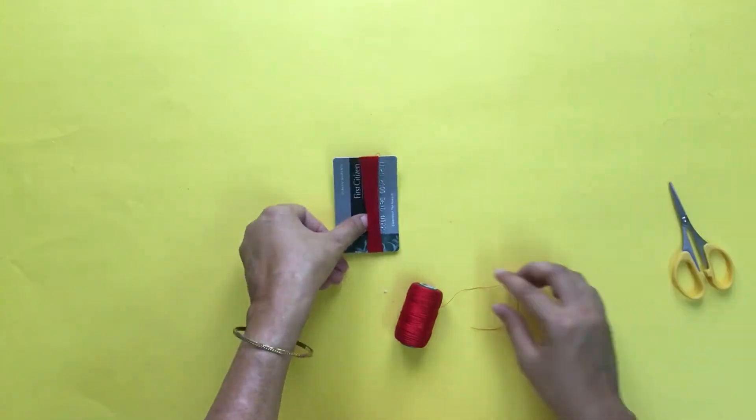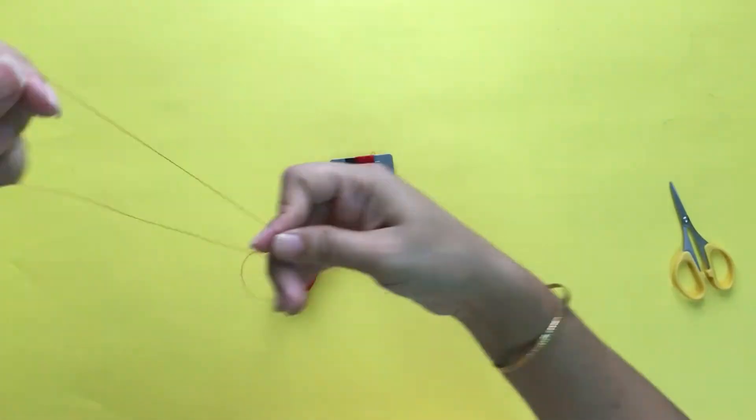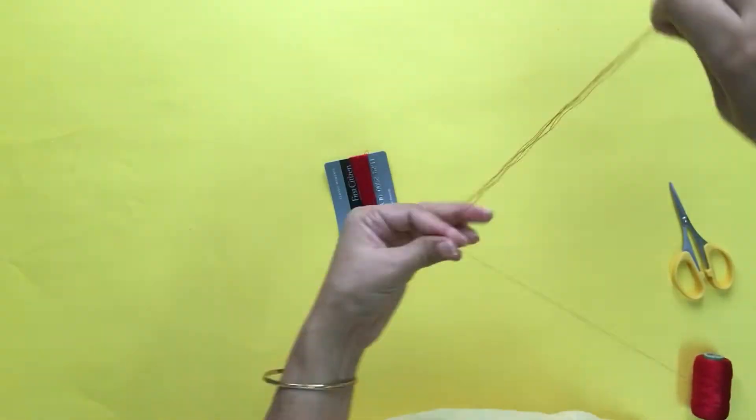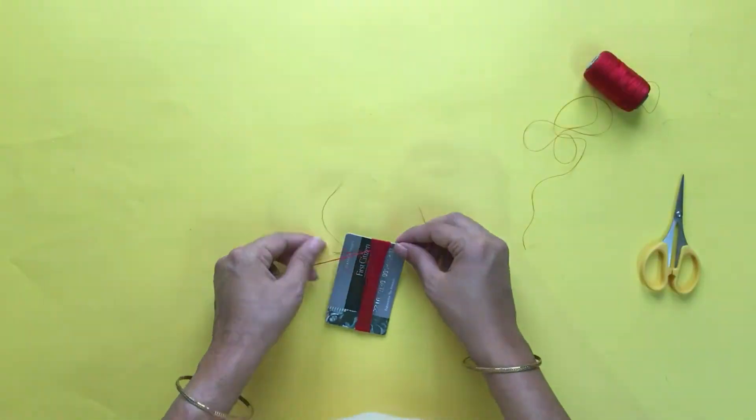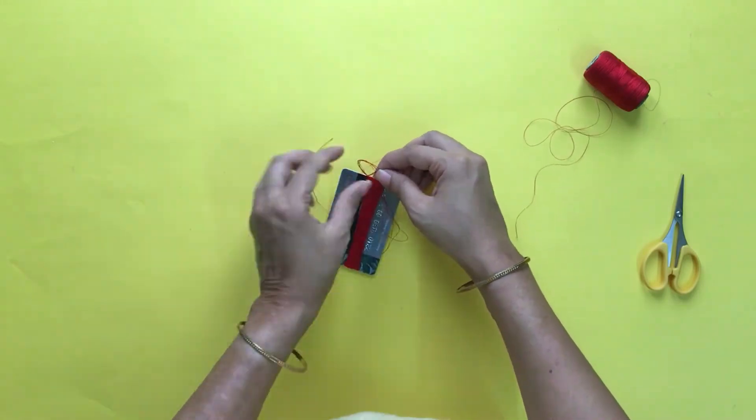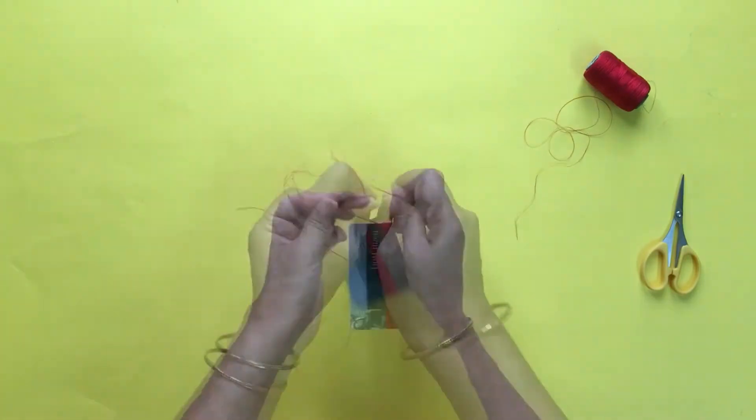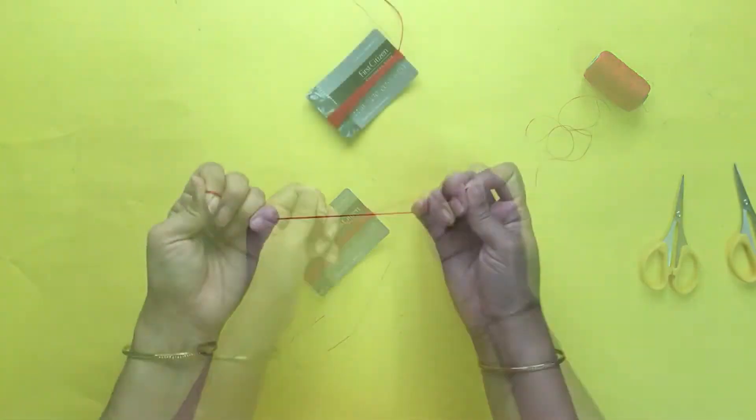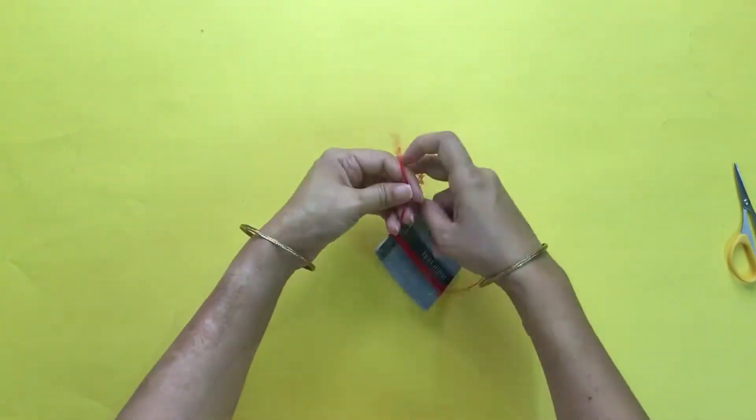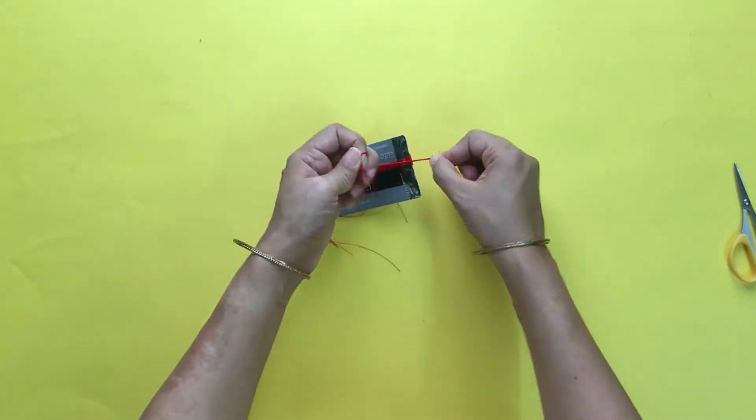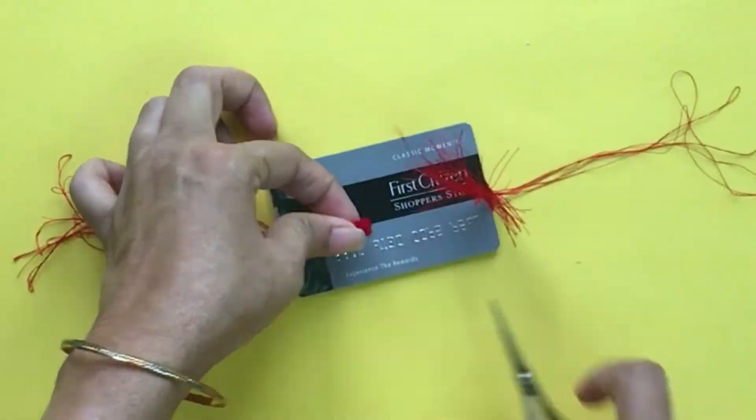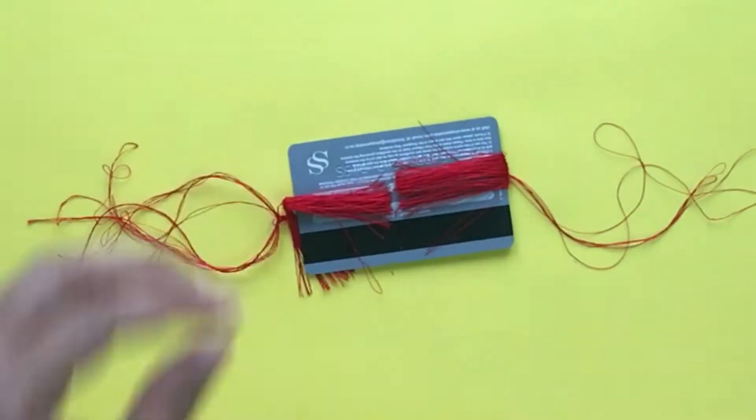Then take multiple silk threads together and tie the thread on the card on both the ends. Cut the silk thread on the card from the middle as shown so that we get two separate pieces.